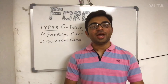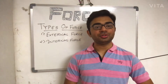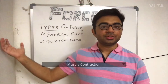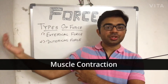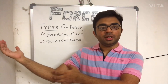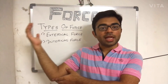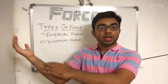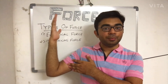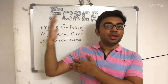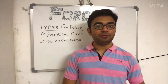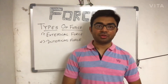Now let's shift to internal force. The best example is muscle contraction. If I contract my biceps, the contraction brings the forearm, wrist, and hand complex near to my shoulder, going into elbow flexion. That is the best example of internal force — contraction of a muscle.